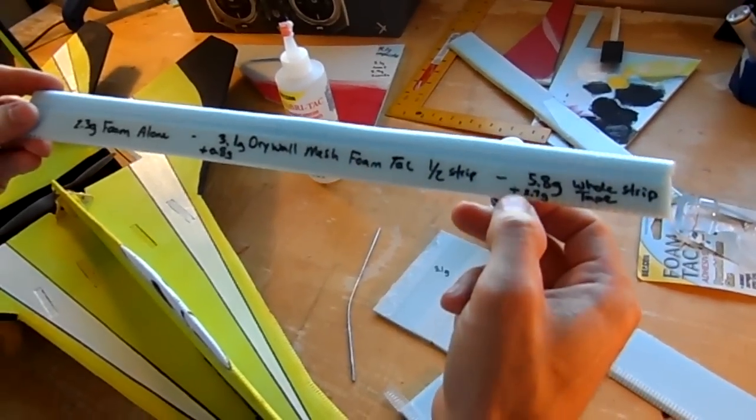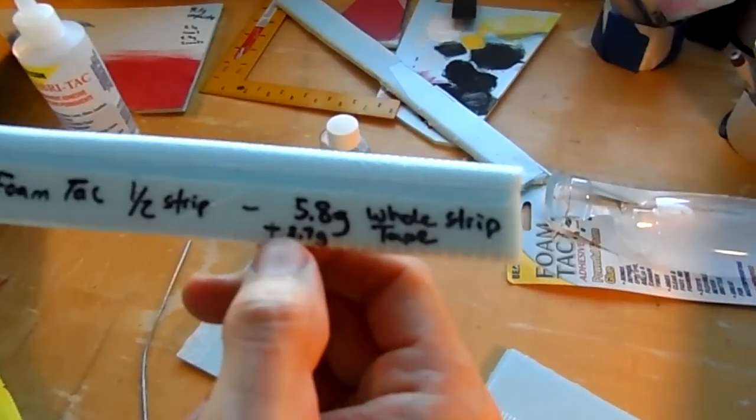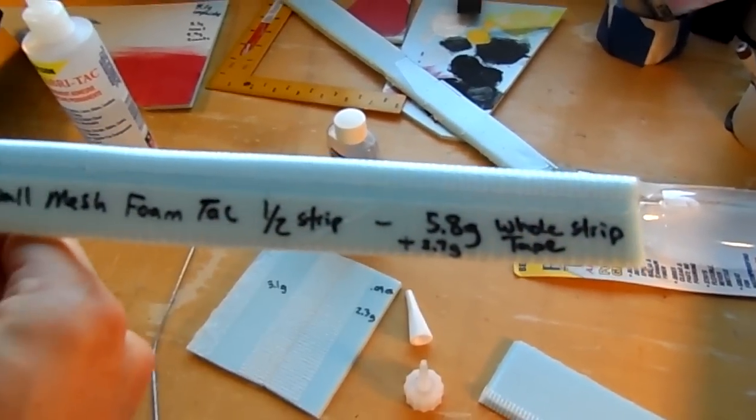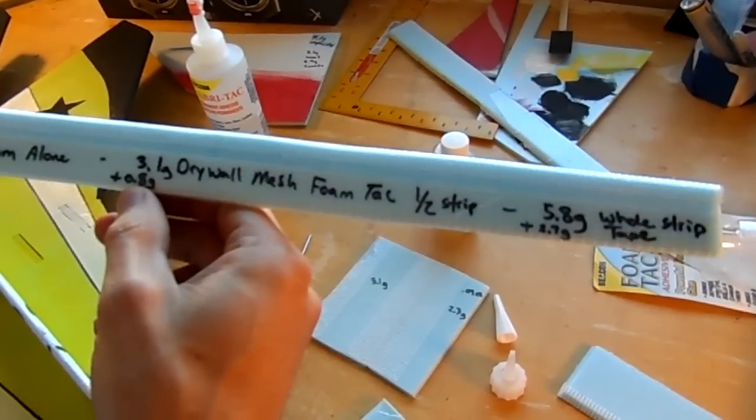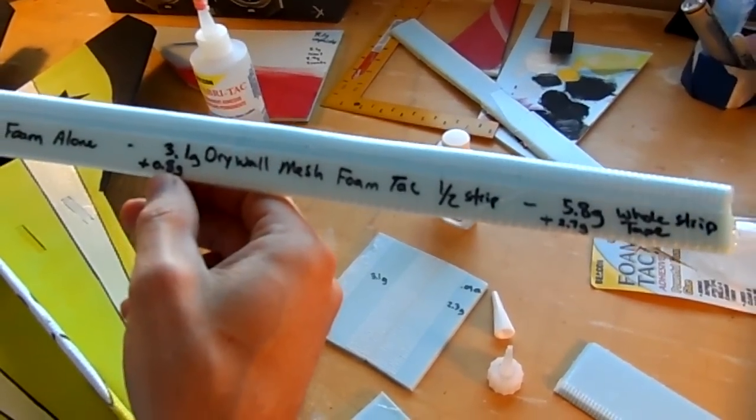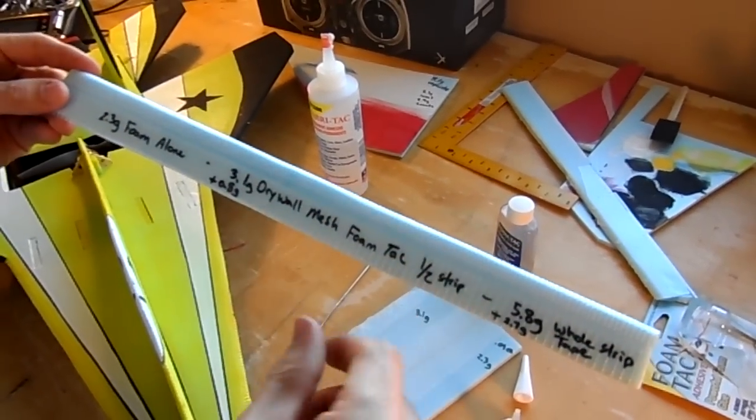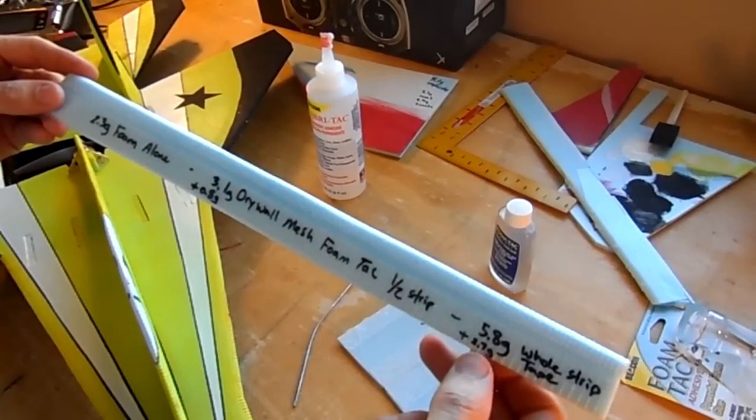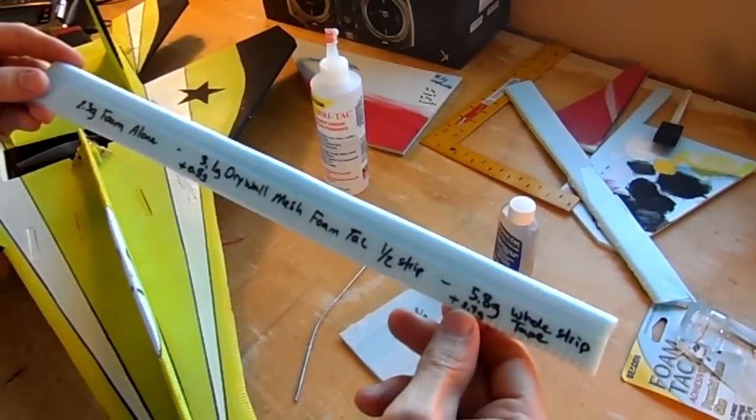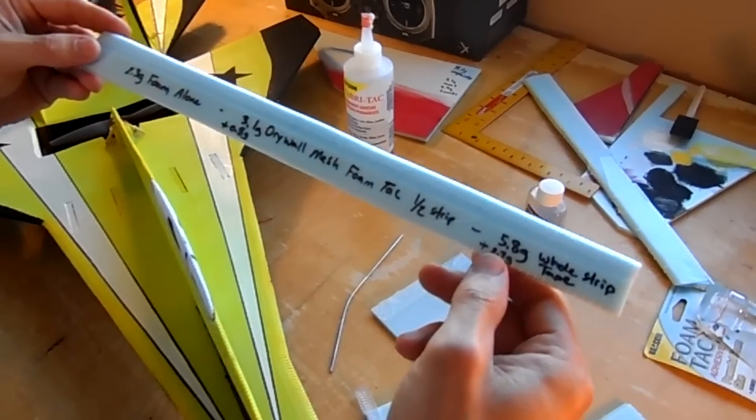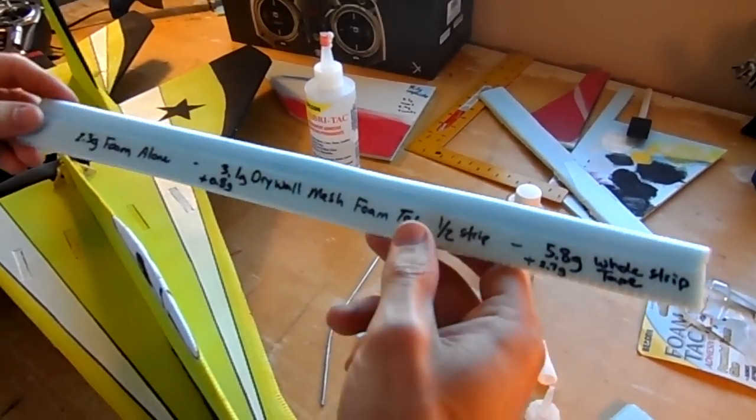And then I did the same thing with the Extreme Fiber Extreme Tape, and it added 2.7 grams versus the 0.8 grams that I added with foam tack and the drywall tape. So the comparison between Extreme Tape and the foam tack and mesh was, the tape was more than three times heavier than the foam tack and the drywall tape. So that's significant.